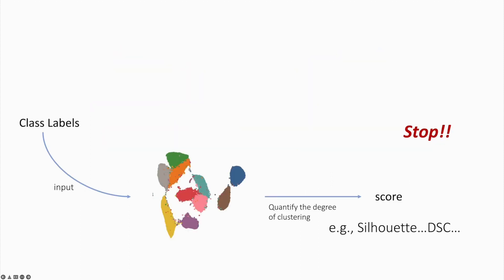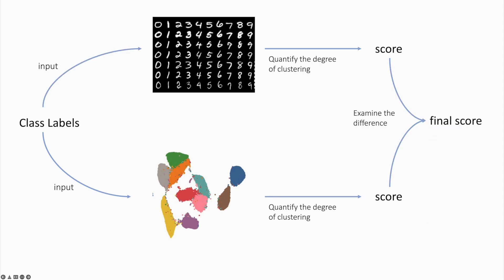Stop using class separation as a criterion for evaluating dimensionality reduction embeddings. Instead, use our improved method of using class labels in evaluating embeddings.